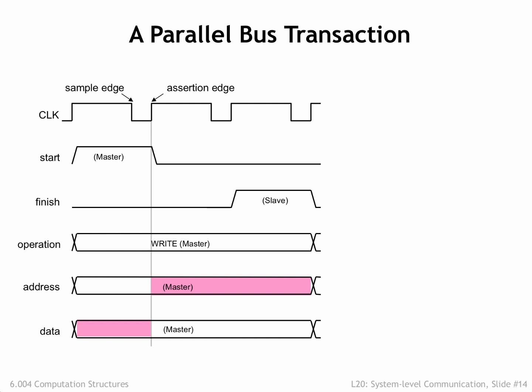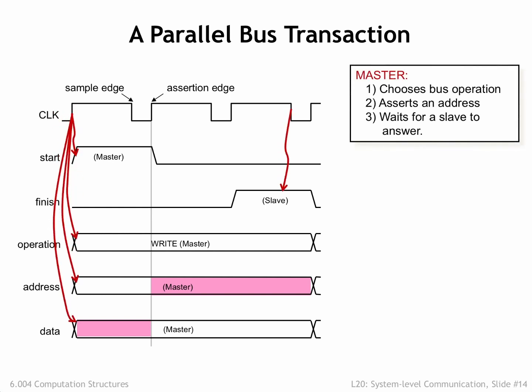Bus is system architect jargon for a collection of wires used to transfer data using a predetermined communication protocol. The clock signal is used to time when signals are placed on the bus wires at the assertion edge of the clock, and when they're read by the recipient at the sample edge of the clock. The timing of the clock waveform is designed to allow enough time for the signals to propagate down the bus and reach valid logic levels at all the receivers. The component initiating the transaction is called the bus master, who is said to own the bus.